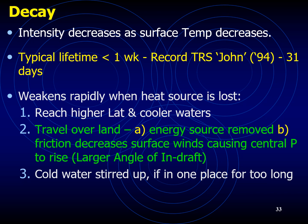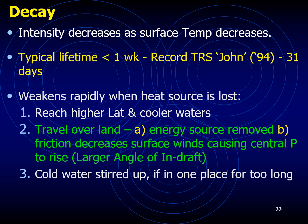If cold water is stirred up, or if there is no cloud formation, or if strong winds come in, these all remove the heat source for the TRS. The TRS needs an organized system of thunderstorms with the latent heat contained within that organized system to keep fueling it. Without this, the TRS will decay. In the next lecture, I will teach you how to estimate the location and predict the movement of the TRS, as well as how to take evasive action to avoid the TRS practically.